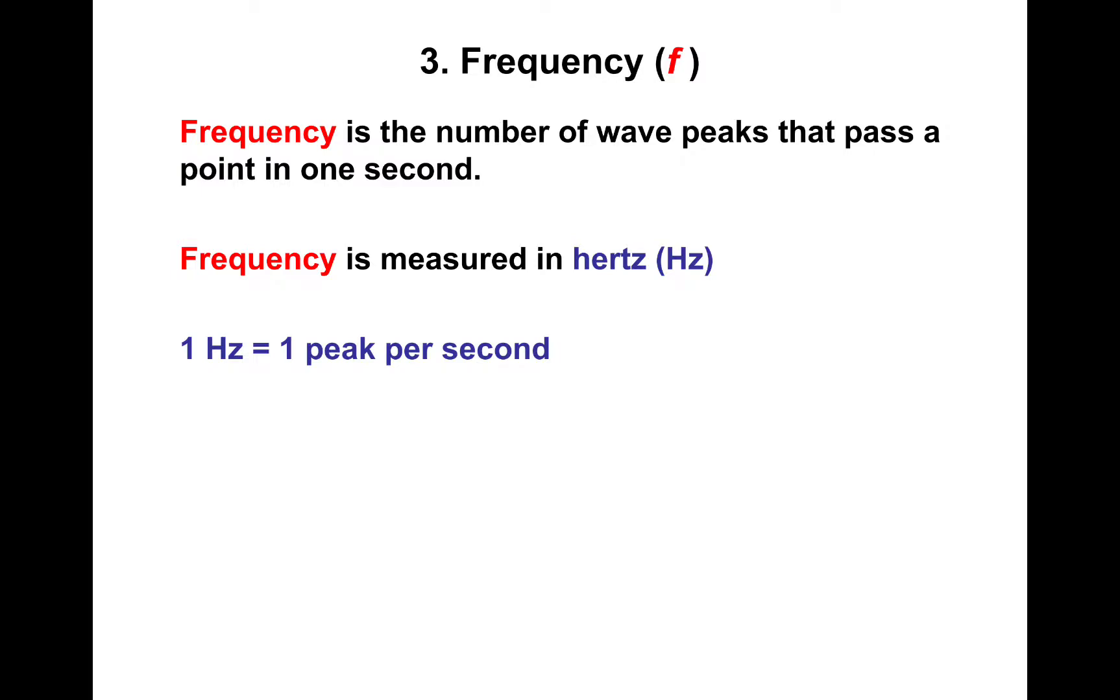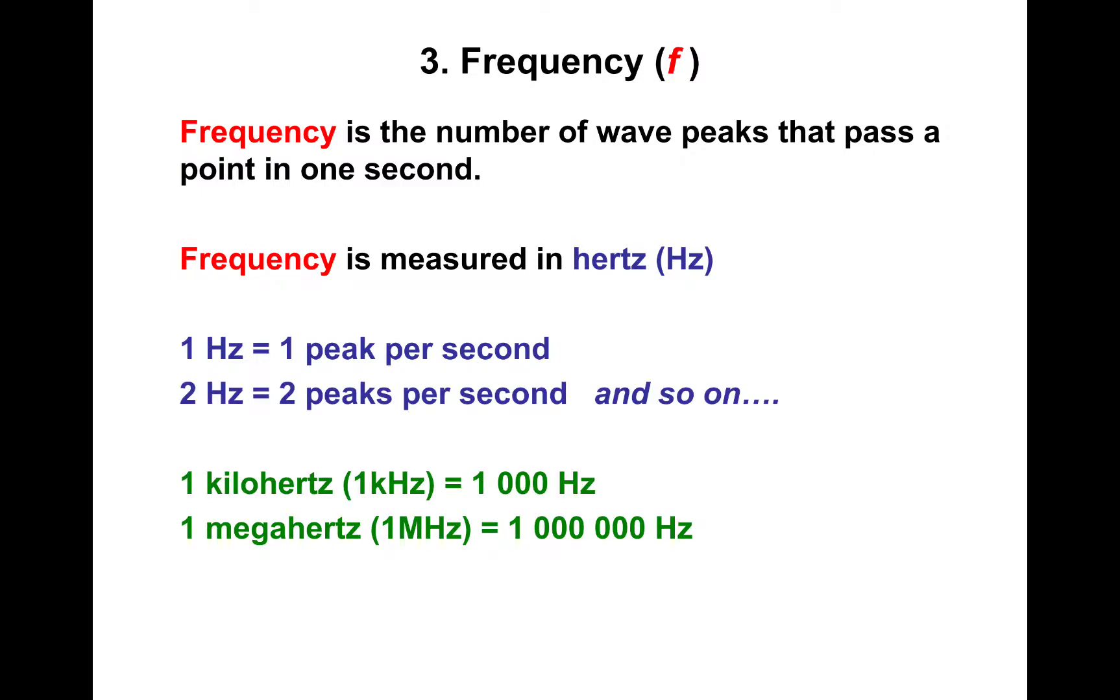Frequencies can get quite large so you might see them as kilohertz or megahertz or even gigahertz. So kilo means a thousand, mega means one million and giga means one billion. But one hertz basically means one wave per second, two hertz means two waves per second and so on. Alright. Let's move on.